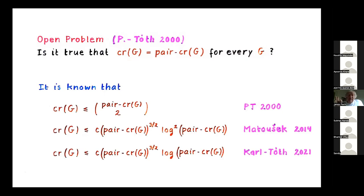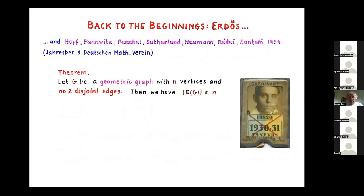The pair crossing number is the smaller one, and the crossing number can be bounded from above by a function of the pair crossing number. If the pair crossing number is fixed, the crossing number cannot be much larger — it is at most the pair crossing number choose 2. The best known result today is that the crossing number is bounded by roughly the three-halves power of the pair crossing number.